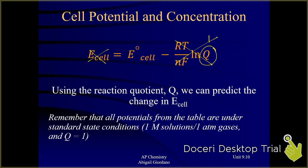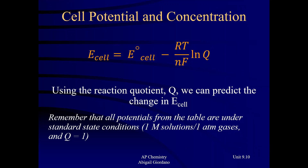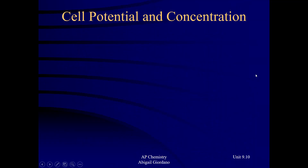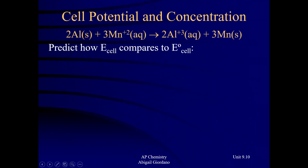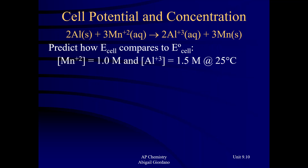But what we're going to look at is: what if one part of this galvanic cell is not at one molar solutions or not at one ATM gases — what is the new cell potential? Let's look at an example. We have a reaction — it's balanced. And the question is: predict how the cell potential when it's not under standard state conditions compares to when it is.